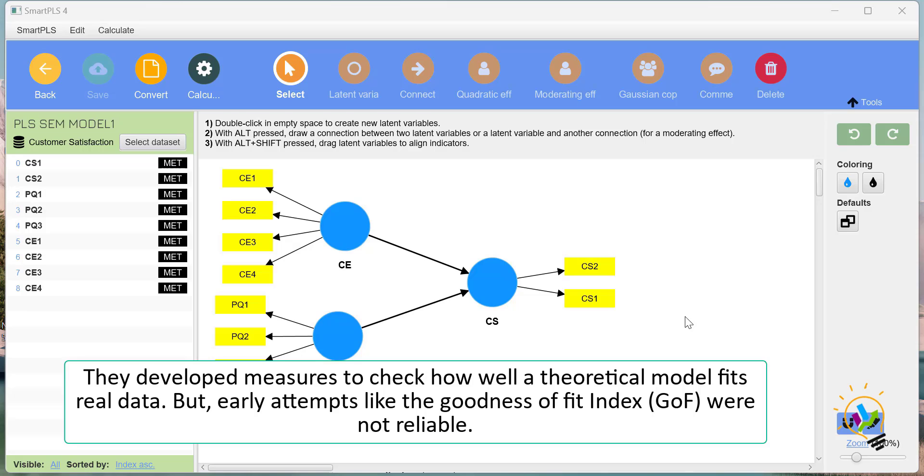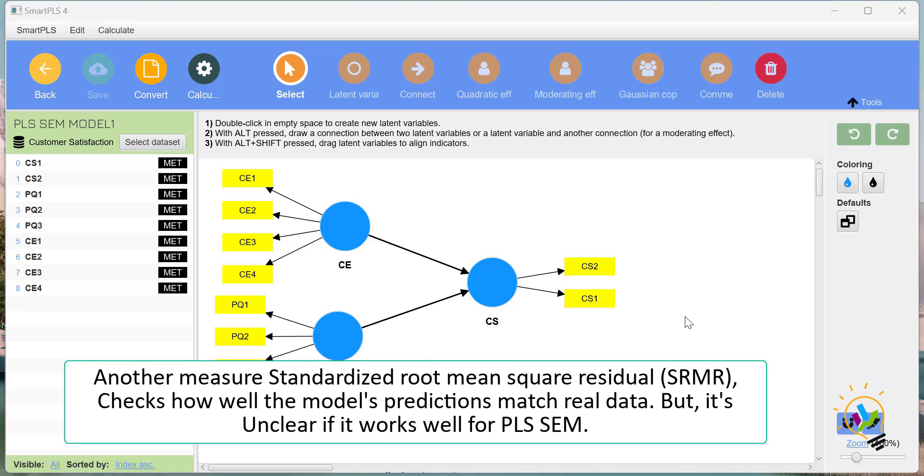Another measure, Standardized Root Mean Square Residual (SRMR), checks how well the model's predictions match real data, but it's unclear if it works well for PLS-SEM.